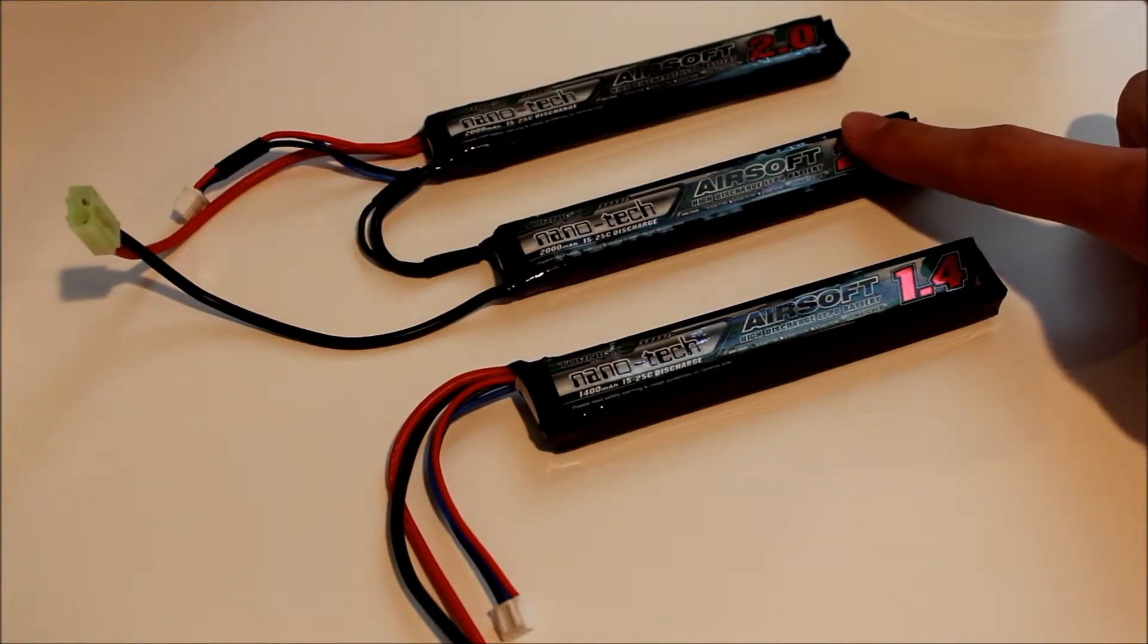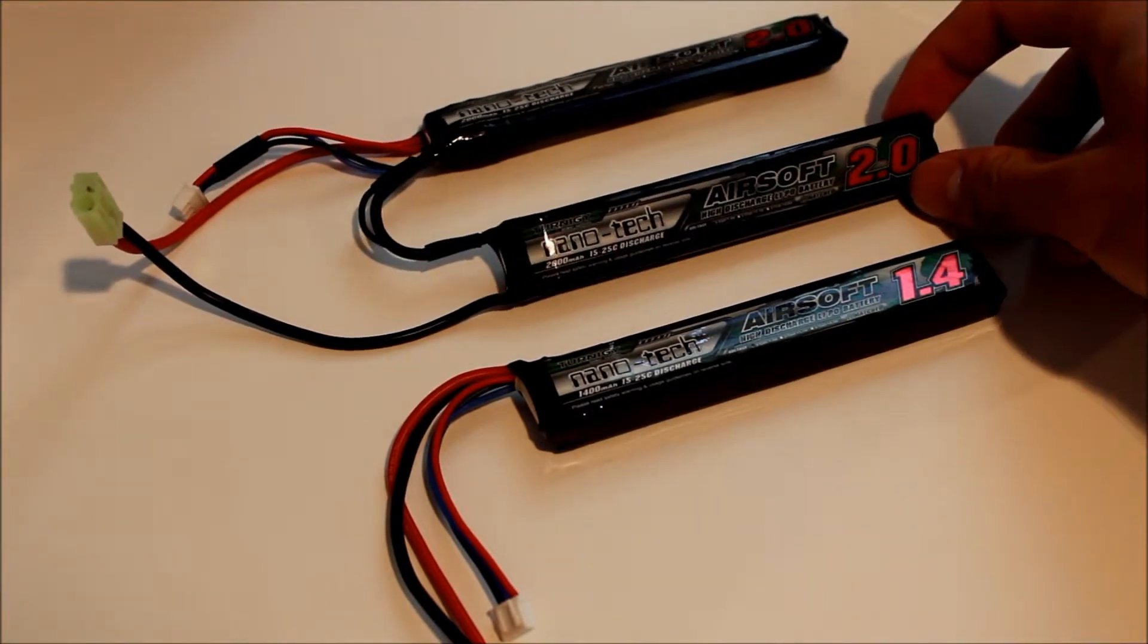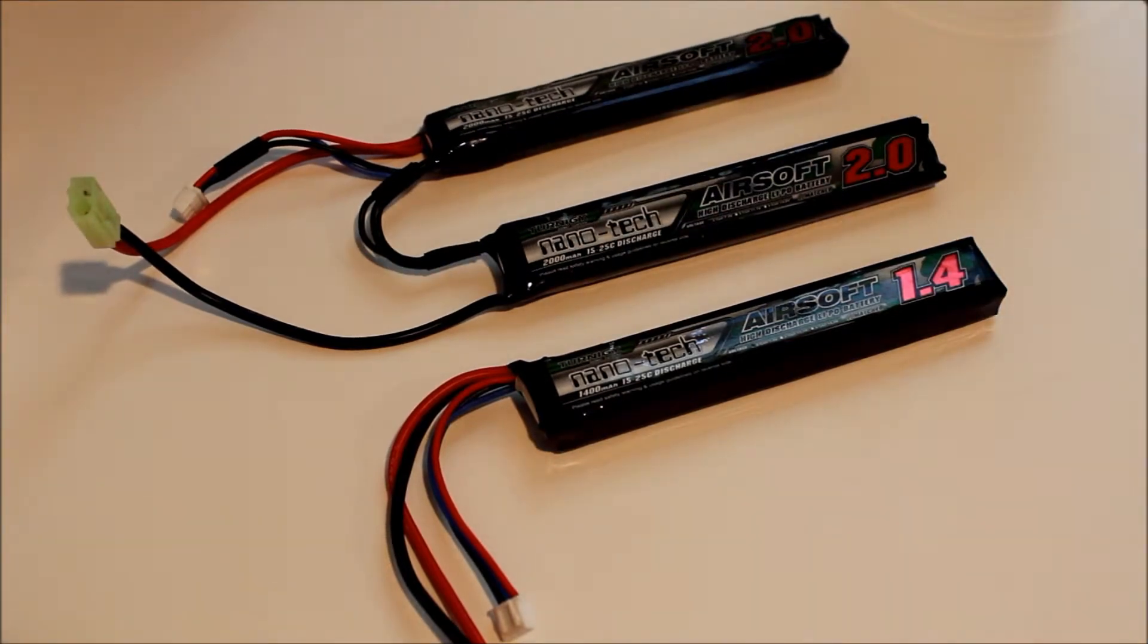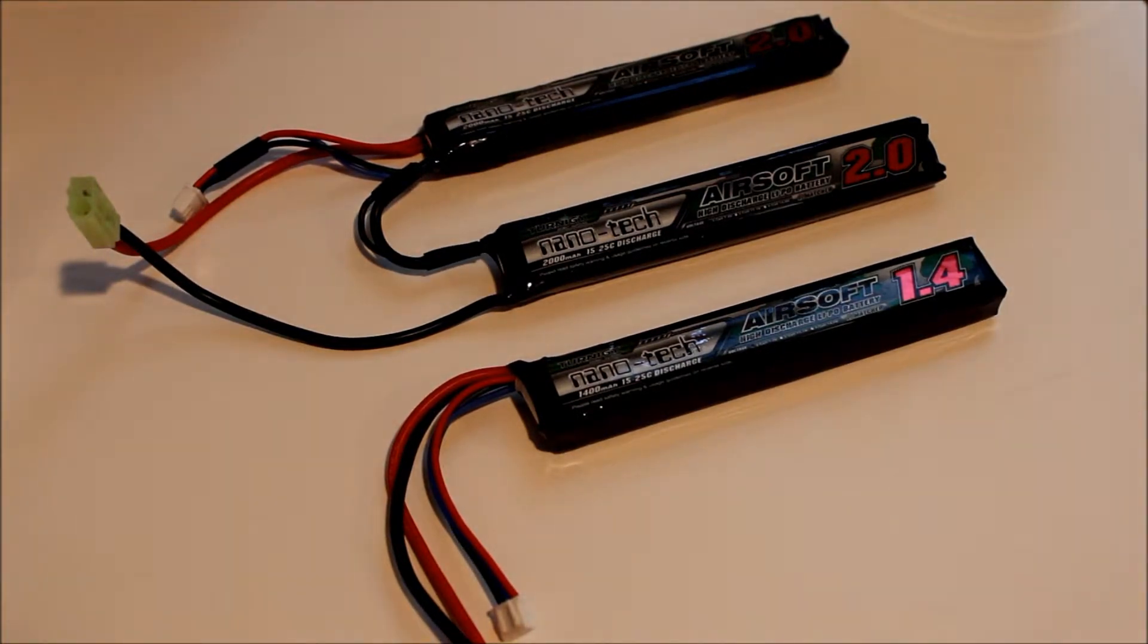Up top you have a Nunchuck 2000mAh 7.4V LiPo battery, 2 cell obviously since it's 7.4V. It acts very similarly to a 9.6V nickel metal hydride, but I prefer the LiPo's and I'll explain the reasoning behind that in a little bit.